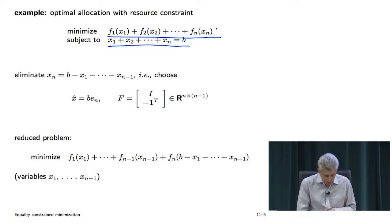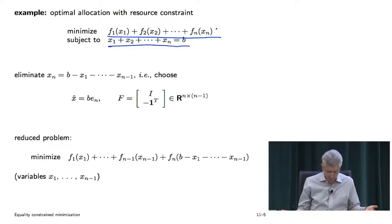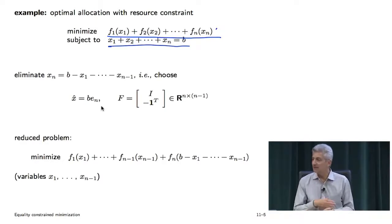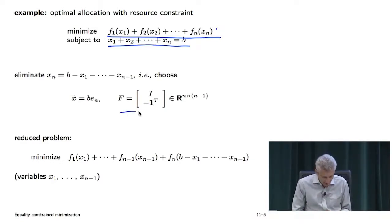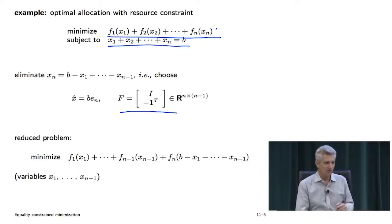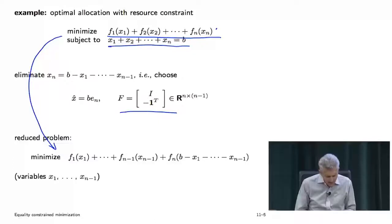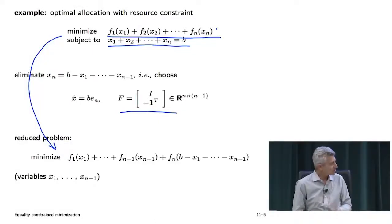So that's a constrained problem. How would you solve it? We do the following obvious elimination. I take x-hat to be b times e_n — that means giving everything to agent n. And here's a matrix whose range is exactly the null space of A, where A is the row vector of all ones, and the null space is all vectors which sum to zero. This transforms to an unconstrained problem. Whatever you can say about this problem, you can solve it super fast — and we'll see there's a way to exploit the structure directly.